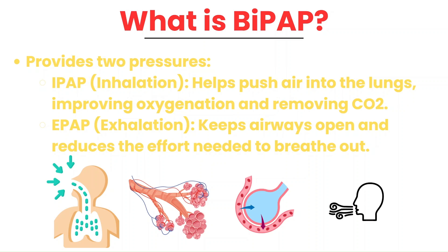BiPAP, or Bi-Level Positive Airway Pressure, unlike CPAP which only provides a single steady pressure, delivers two different pressures — one for breathing in and one for breathing out. The higher pressure during inhalation, called IPAP or Inspiratory Positive Airway Pressure, helps push air into the lungs. This extra push helps patients who are tiring out breathe easier, since they don't have to work as hard to get air in. This push of oxygenated air also helps ventilate by providing air volume that will exchange oxygen for CO2, improving oxygen delivery and helping the patient exhale CO2 more effectively. The lower pressure during exhalation, called EPAP or Expiratory Positive Airway Pressure, just like CPAP, helps keep the airways and alveoli open.